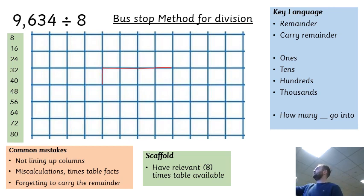Again, we're going to start by drawing out a bus stop shape. Because I'm dividing a four-digit number, I'm going to leave enough boxes for four digits and then put my number in there: 9,634. I'm dividing that number by eight.